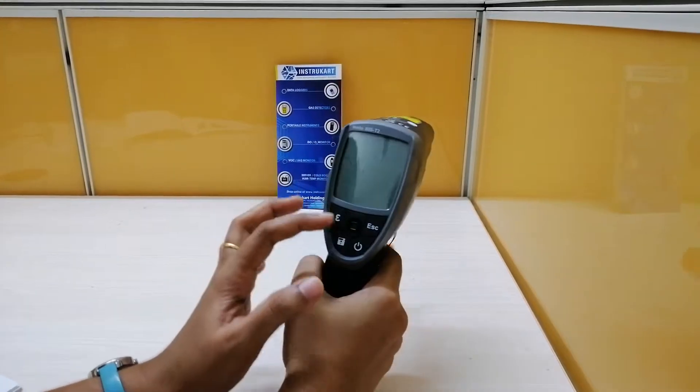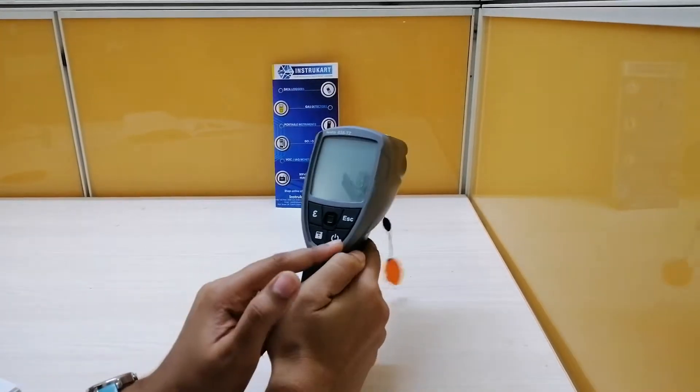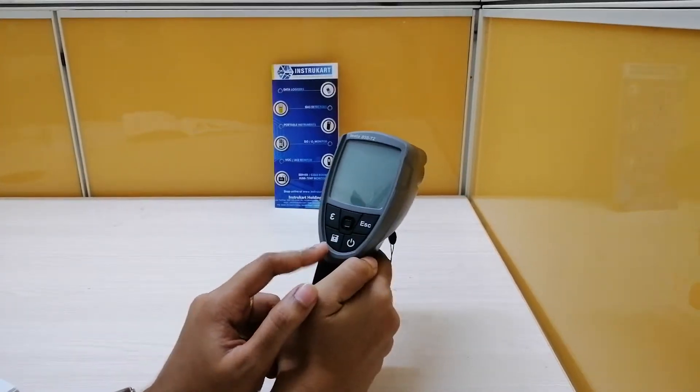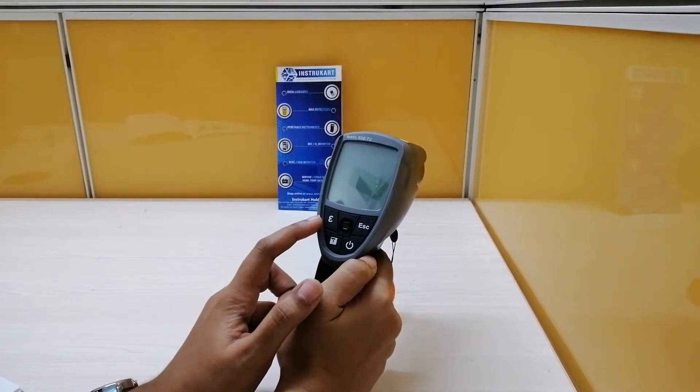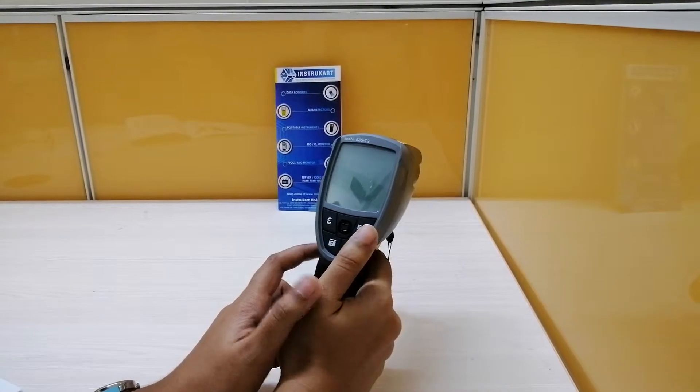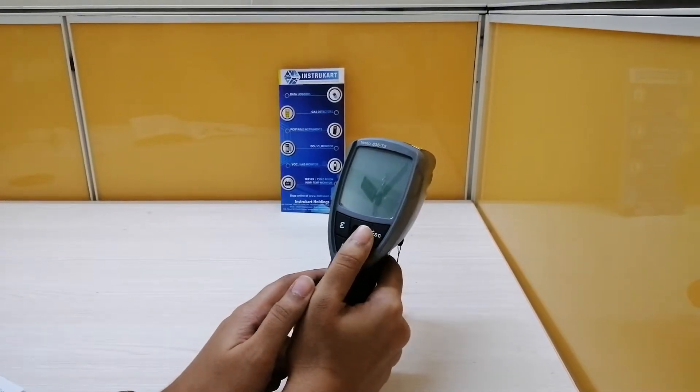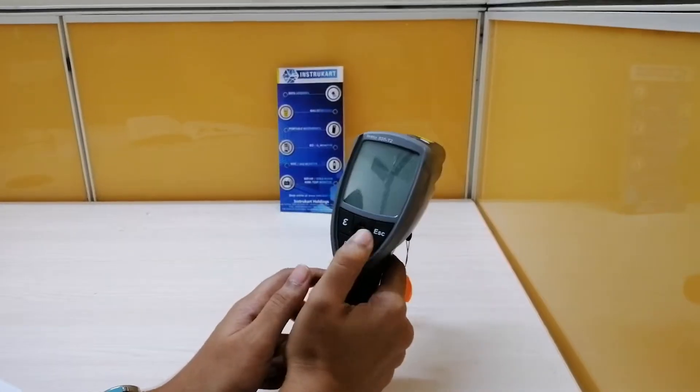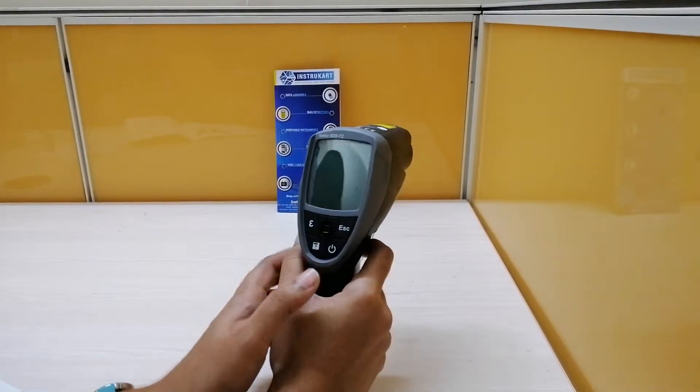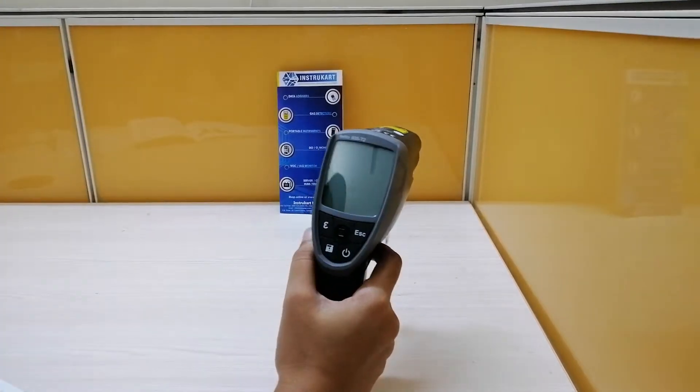Here are the keys: power key, save measuring values, emissivity menu, escape or back key. This is a joystick. Here is the screen display.